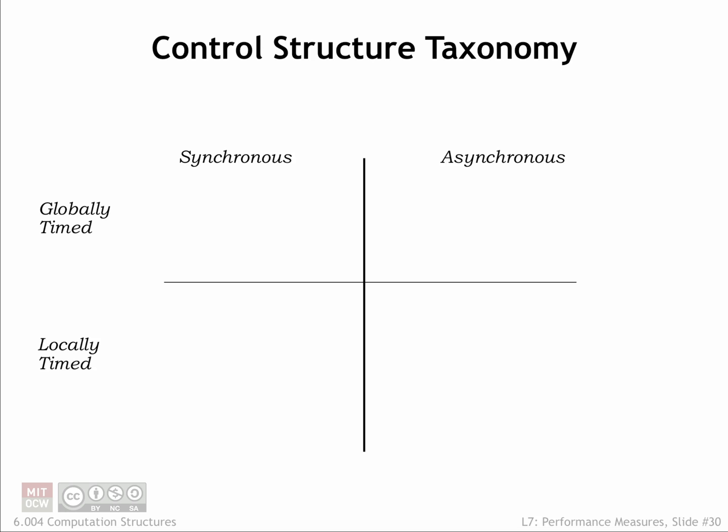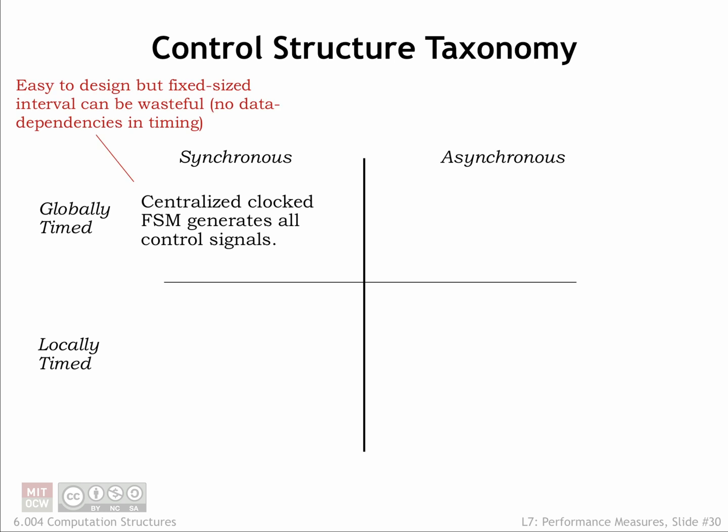Let's summarize what we've learned about controlling pipeline systems. The most straightforward approach is to use a pipeline with a system clock chosen to accommodate the worst-case processing time. These systems are easy to design, but can't produce higher throughputs if the processing stages might run more quickly for some data values.